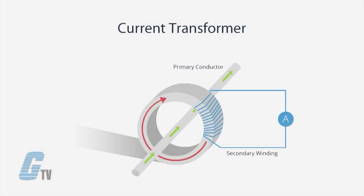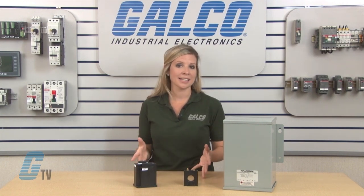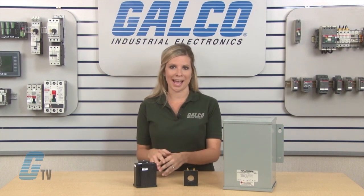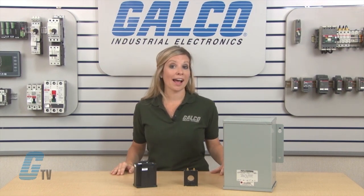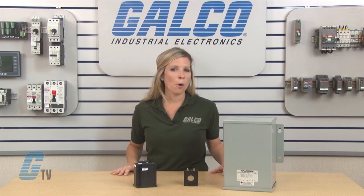A current transformer has a primary coil of one or more turns of heavy wire. It is always connected in series in the circuit in which current is to be measured. The secondary coil is made up of many turns of active wire, which must always be connected across the ammeter terminals. There is a wide range of possible primary voltages because the device can be connected to many types of conductors. The secondary must always be available to react with the primary to prevent the core from becoming completely magnetized.